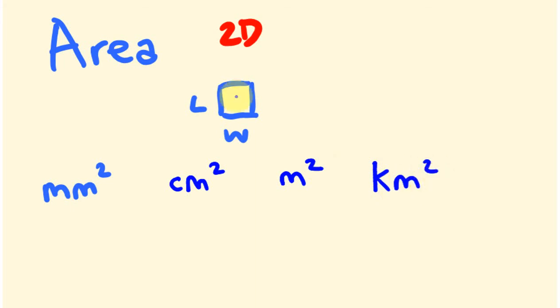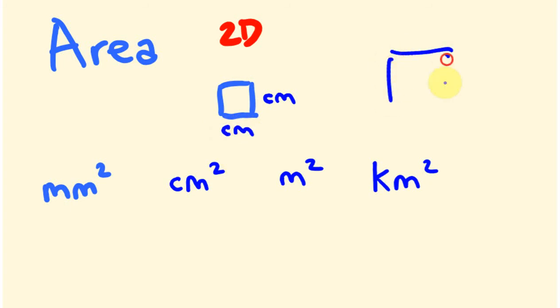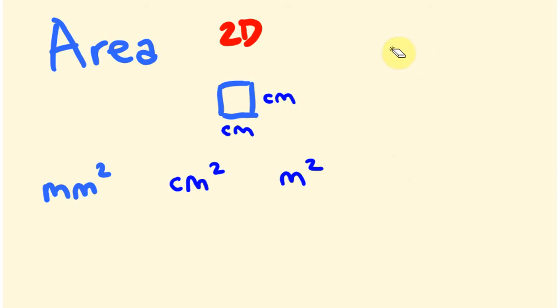The idea you have to get with these units is that they represent this sort of shape. A square centimeter is literally a centimeter by a centimeter. A square meter is a meter by a meter — you can imagine a meter this way and a meter that way. That's what we'd call a meter squared, and that's how we measure two dimensional objects.